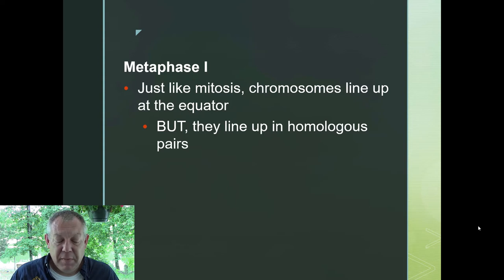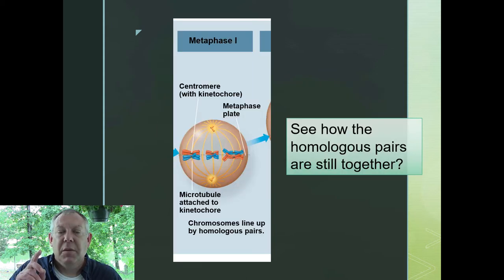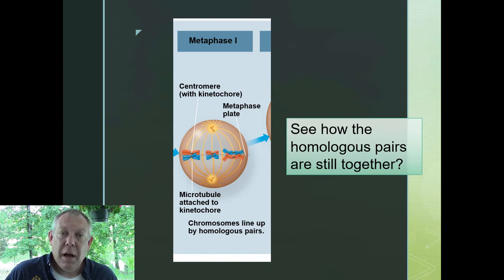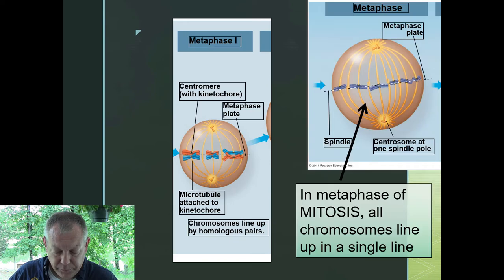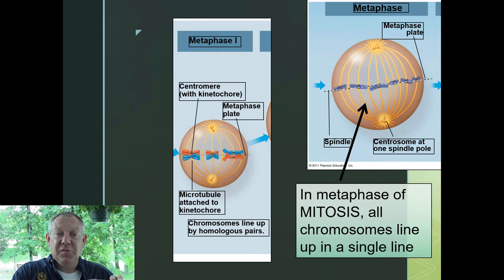After prophase comes metaphase. In metaphase I, just like in mitosis, the chromosomes go to the middle — but they do it in a slightly different manner. During metaphase I, the homologous pairs line up at the equator. You can see in this example of metaphase I that those homologous pairs are still together, lined up with their meiosis buddy right at the equator. Contrast that with metaphase of mitosis, where the chromosomes are not paired up — you get one single line of chromosomes at the equator. Whereas in metaphase I of meiosis, you get a double line of chromosomes because they're paired up.